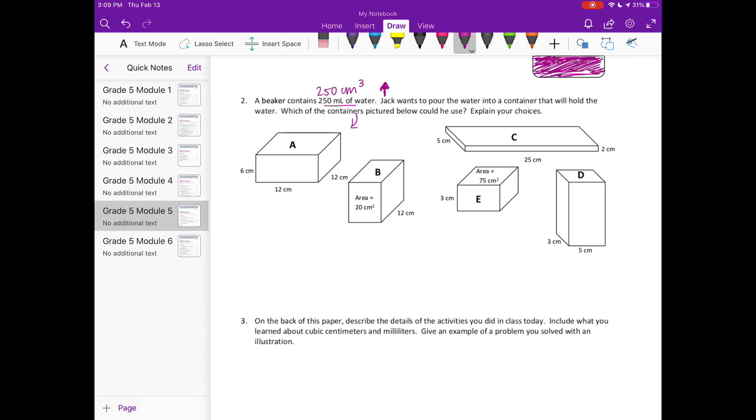Because he just wants something that will hold the water. So it could be 250 or it could be bigger. It can't be any smaller or it will all spill over. So let's look at A. We have 12 by 12, which is 144 times 6. Now I already know that 144 times 6 is going to be much bigger than 250, so A we could use. If we want to actually multiply it out we could for our explanation.